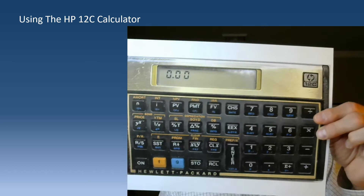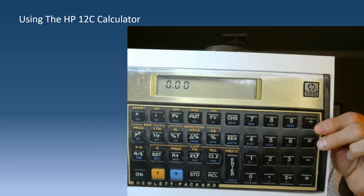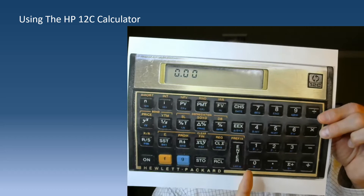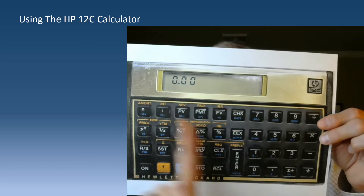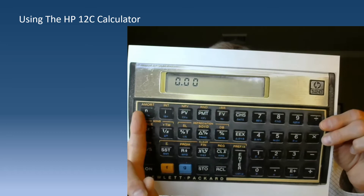For future value and present value calculations we only need three of the four inputs. For a simple example: $100 is the present value at 10% for one year - what do we get in the future? Just do 100, PV, then 1, N for one period, 10, I for interest rate, and hit FV. It calculates it for you. Watch: 100, present value, 1 period, 10 I, future value - there it is: 110.